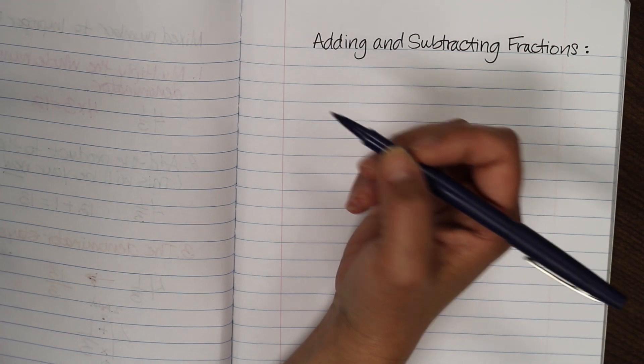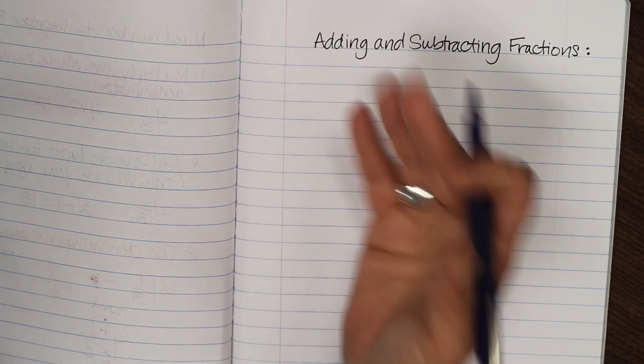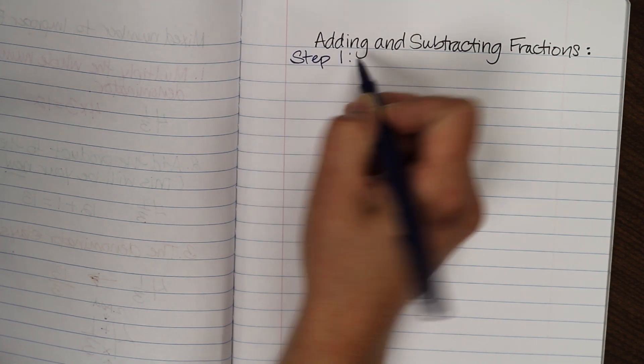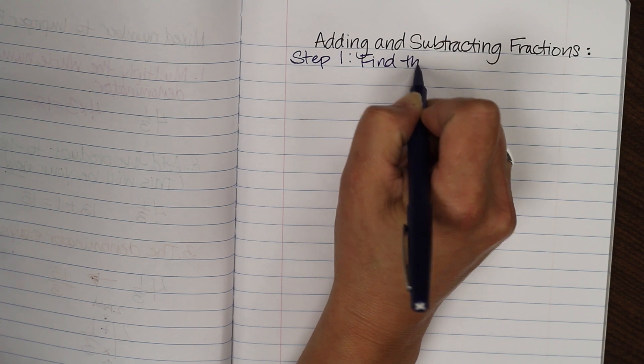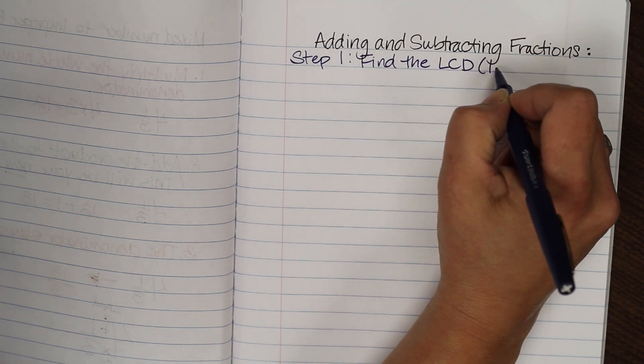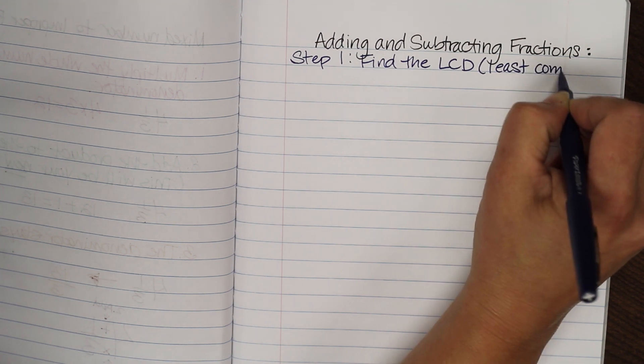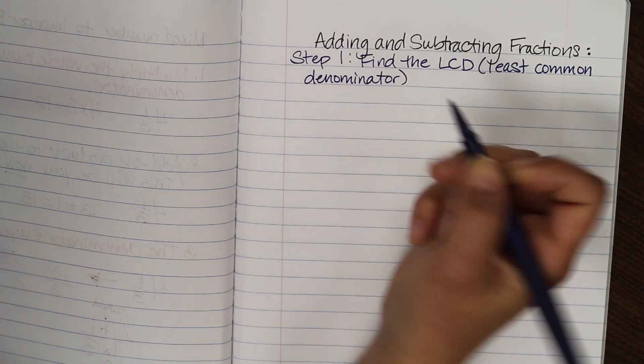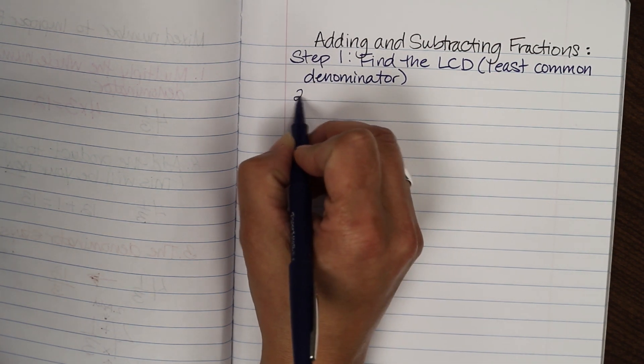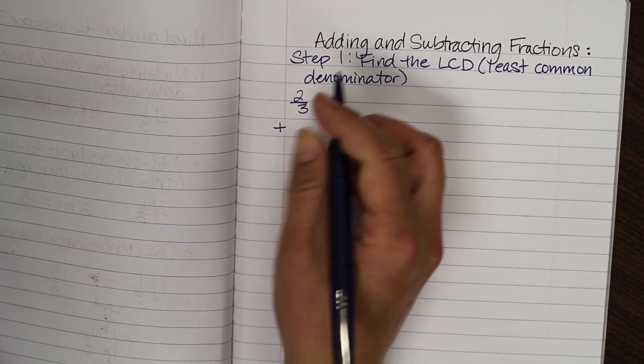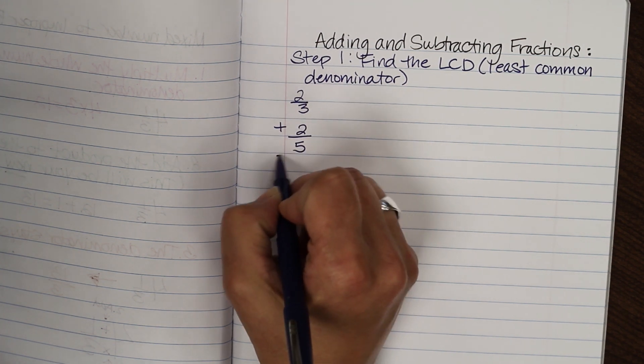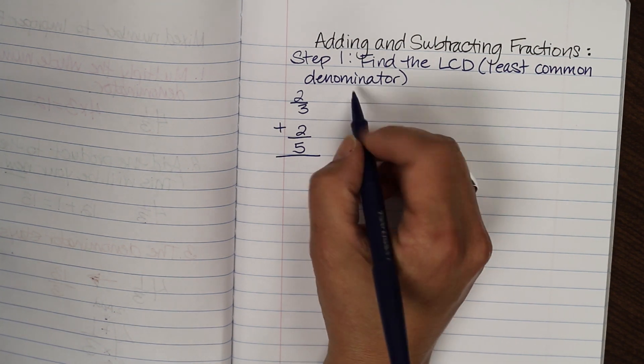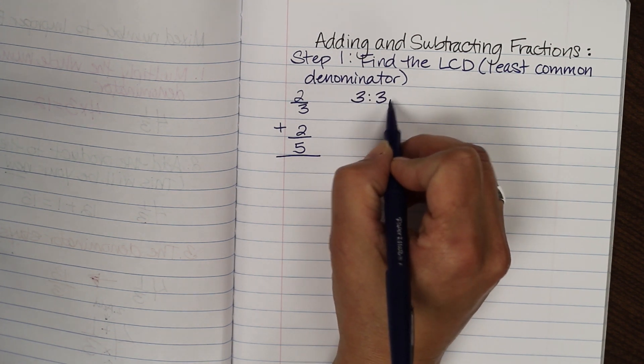Previously we had learned how to find the LCD or least common denominator. When you add and subtract fractions, that's the first step. So step one is going to be find the LCD or the least common denominator. Let's put a fraction up here. Say I had two thirds plus two fifths. This is my equation. First thing I want to do is find the common denominator for both three and five. So my first step is going to be to list my multiples of those two numbers.